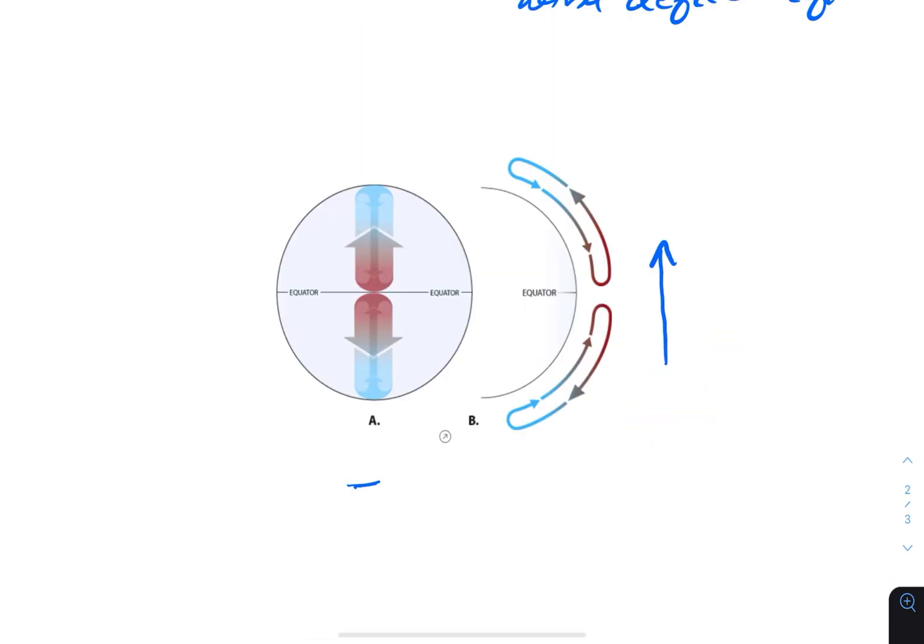If the earth did not rotate on its axis and remained stationary, the atmosphere would only circulate between the earth's polar regions, areas of high pressure, and the equator, a low pressure area, in a simple back-and-forth pattern.